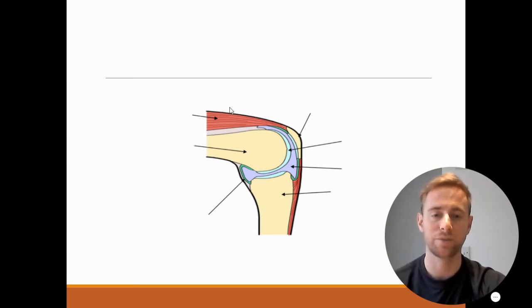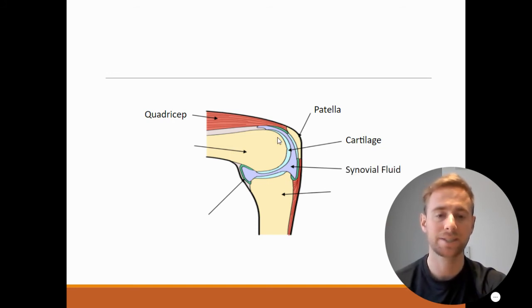So this is a knee joint. First one is our quadriceps - this is our main quadriceps muscle. Second is the patella, so number two was the patella. Number three, on the end of our bone here, is the cartilage. Number four, the purple bit going all the way around in the middle here, is the synovial fluid. Number five, the bone underneath, is the tibia.